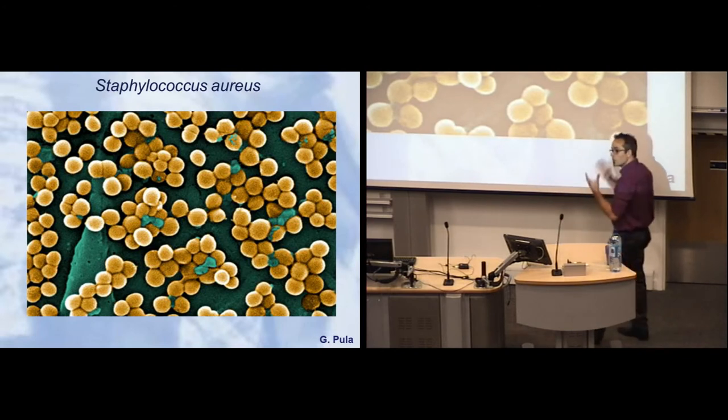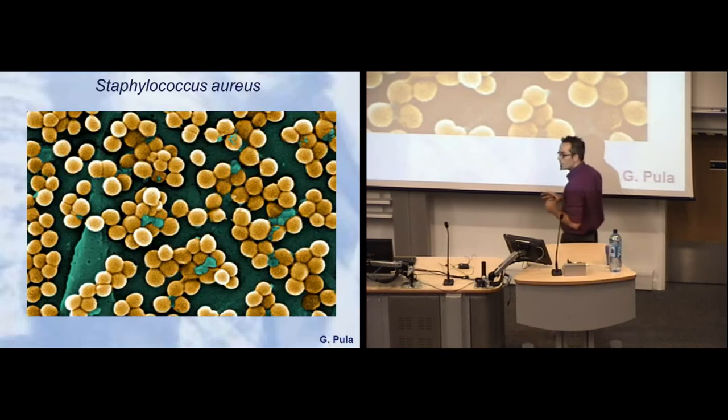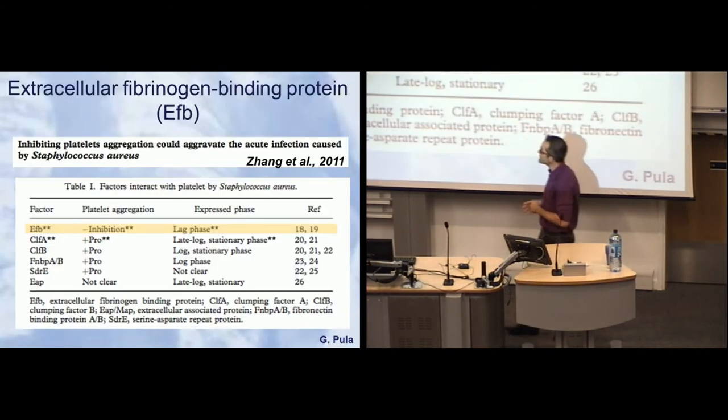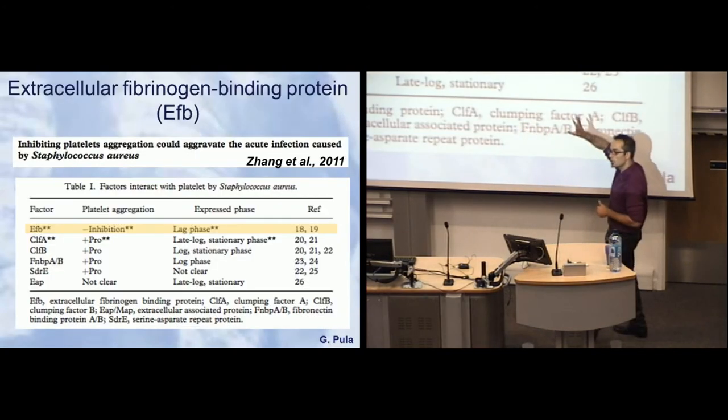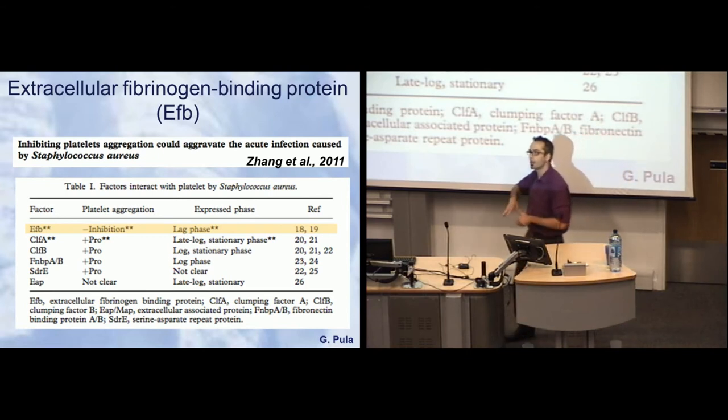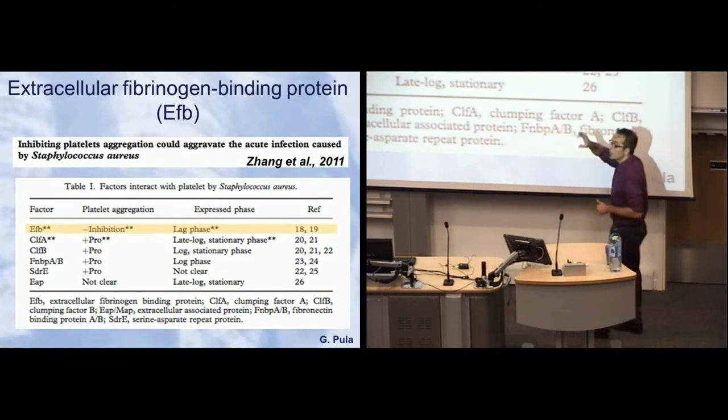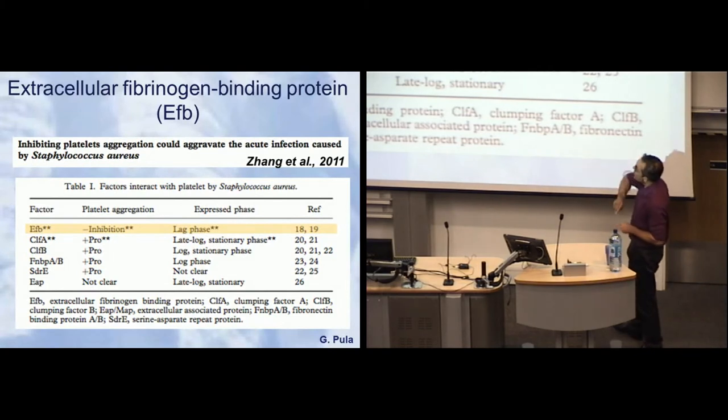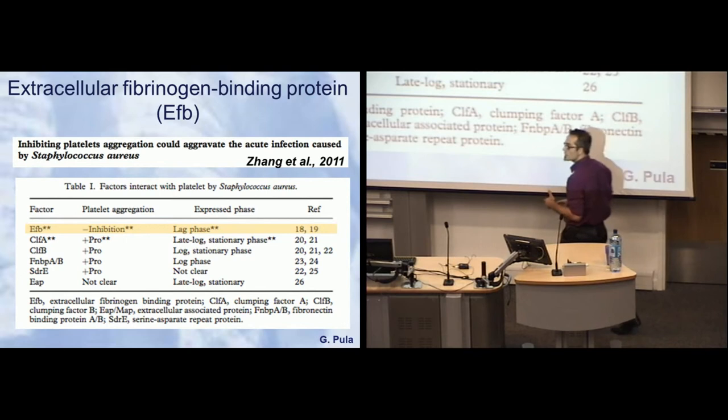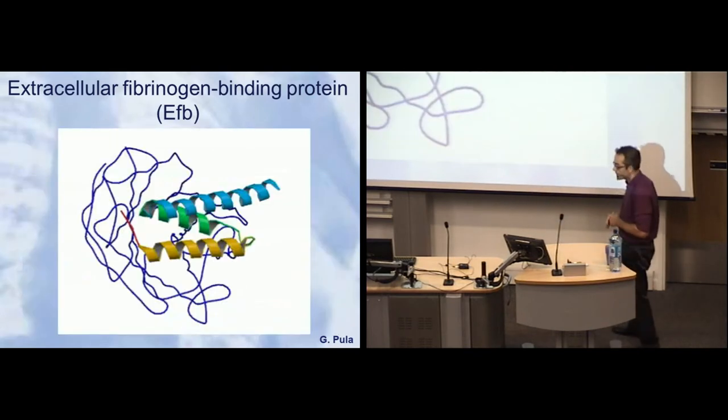But amongst all the bad things that this bacterium does, there are some interesting things, like releasing a series of proteins which interact and modulate the activity of platelets. Some of them inhibit platelets. The most remarkable one is Efb, the protein I'm talking to you about today, which has been suggested to inhibit platelet activation.